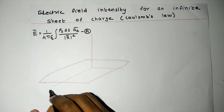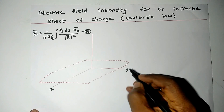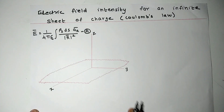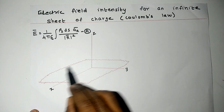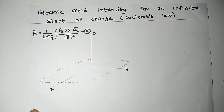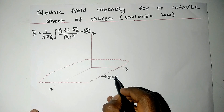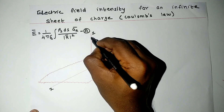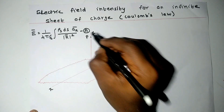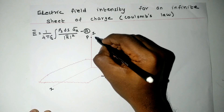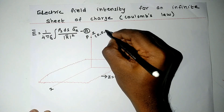These are three reference axes x, y, z as I have shown you with the pen. This red color marking is the infinite sheet of charge where z equals 0. This is the point where electric field intensity is to be estimated. This height is assumed to be h, so this point will be (0, 0, h).